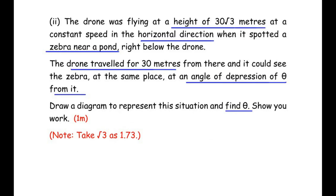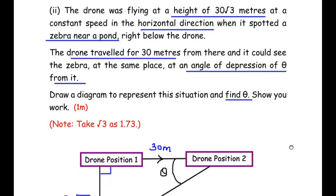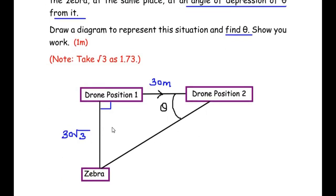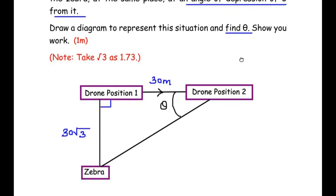Here I have drawn a rough diagram. The diagram shows two positions of the drone — the drone is flying at a height of 30√3 meters above the ground and spotted a zebra right below it. After spotting it, the drone kept moving horizontally for a distance of 30 meters to reach the second position. From that position it looked down towards the zebra. Since the angle made by the drone towards the zebra is downwards, we call it the angle of depression. Theta represents the angle of depression.